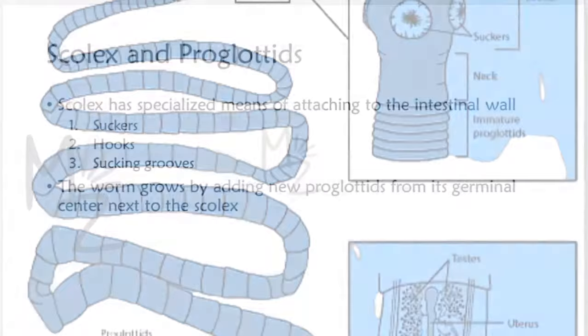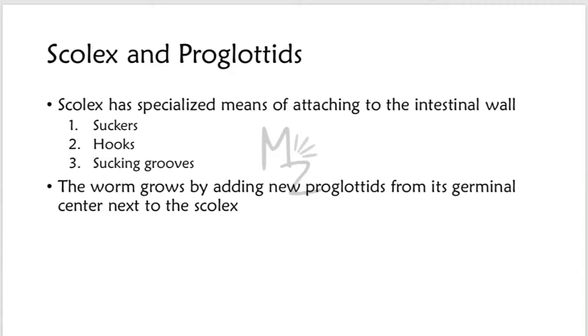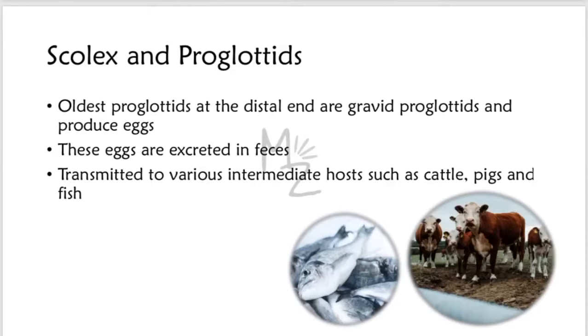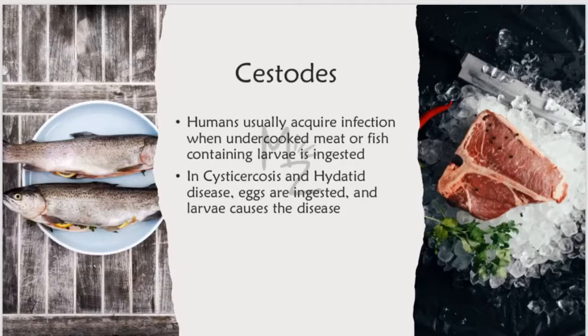Let's talk about scolex and proglotid. The scolex has specialized means of attaching to the intestinal wall, namely suckers, hooks, or sucking grooves. The worm grows by adding new proglotids from its germinal center next to the scolex. The oldest proglotids at the distal end are gravid and they produce many eggs which are excreted in feces and transmitted to various intermediate hosts such as cattle, pigs, and fish. Humans usually acquire this infection when undercooked meat or fish containing the larvae is ingested.